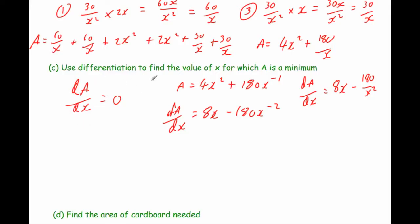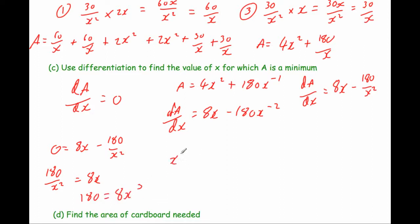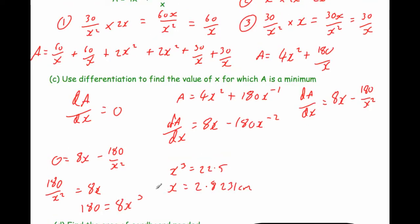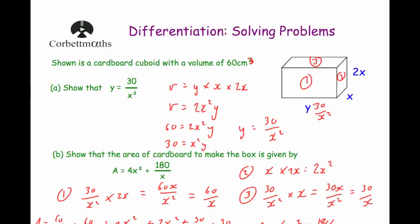Setting dA/dx equal to zero: 0 equals 8X subtract 180 over X squared. Adding 180 over X squared to both sides: 180 over X squared equals 8X. Multiplying both sides by X squared: 180 equals 8X cubed. Dividing by 8: X cubed equals 22.5. Taking the cube root gives X equals 2.8231 centimetres. This value of X gives the minimum surface area for the cuboid with volume 60 cm³.